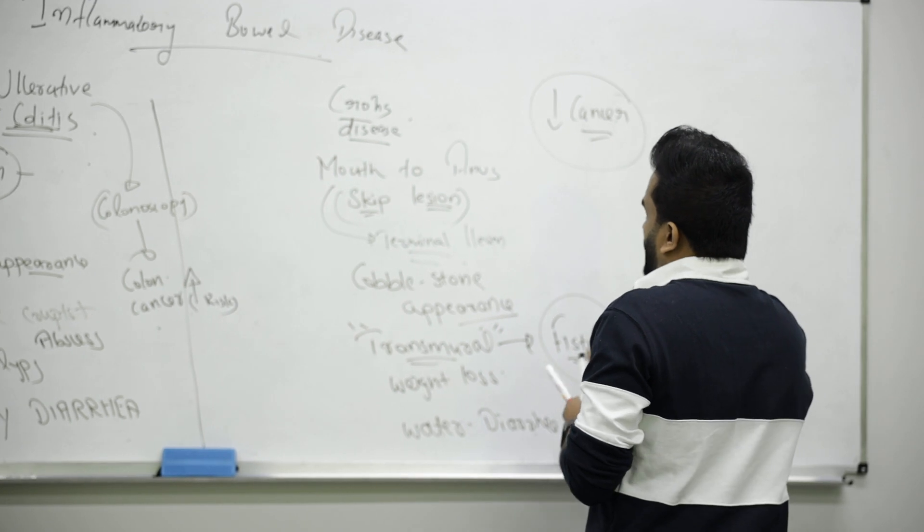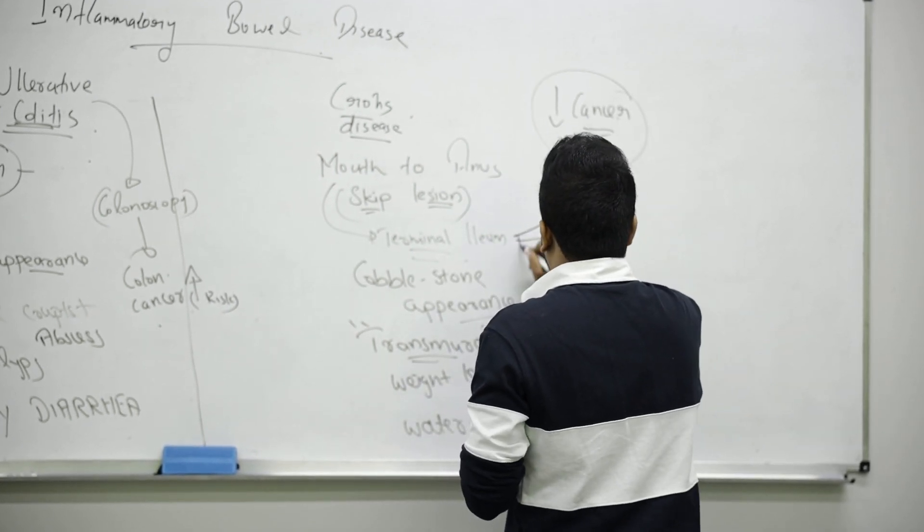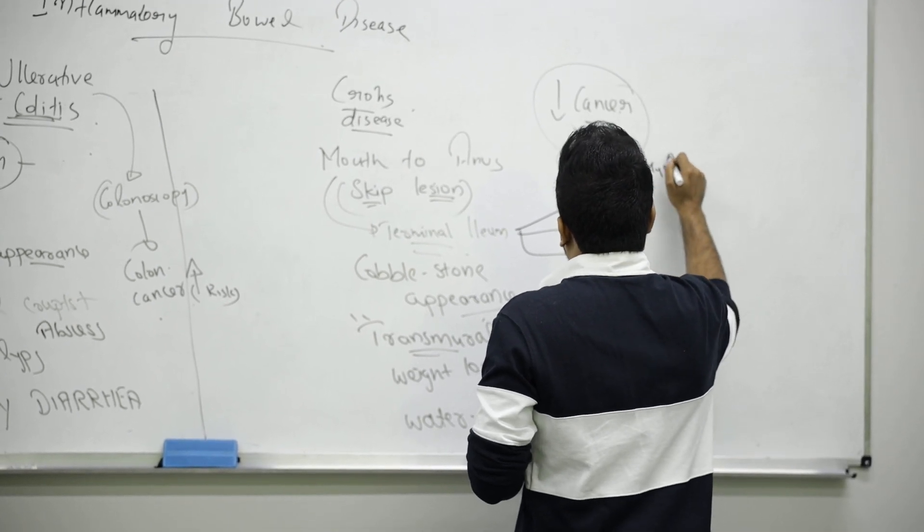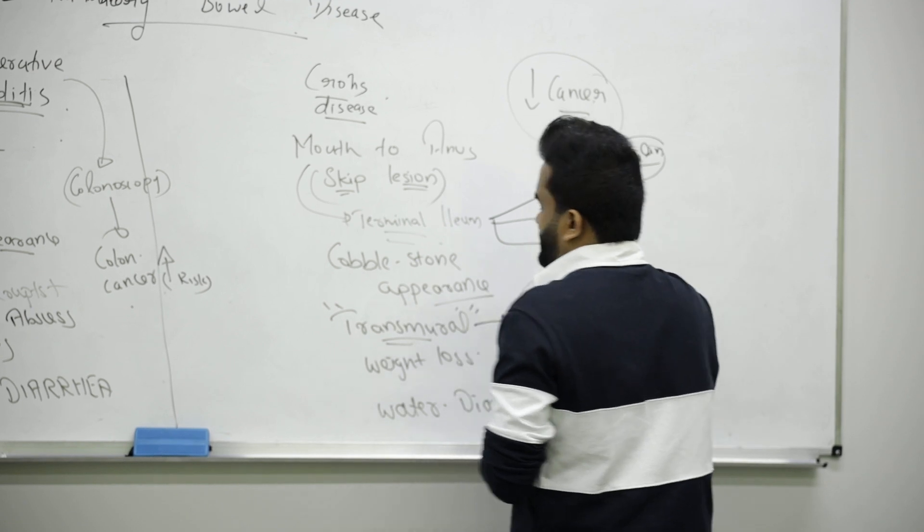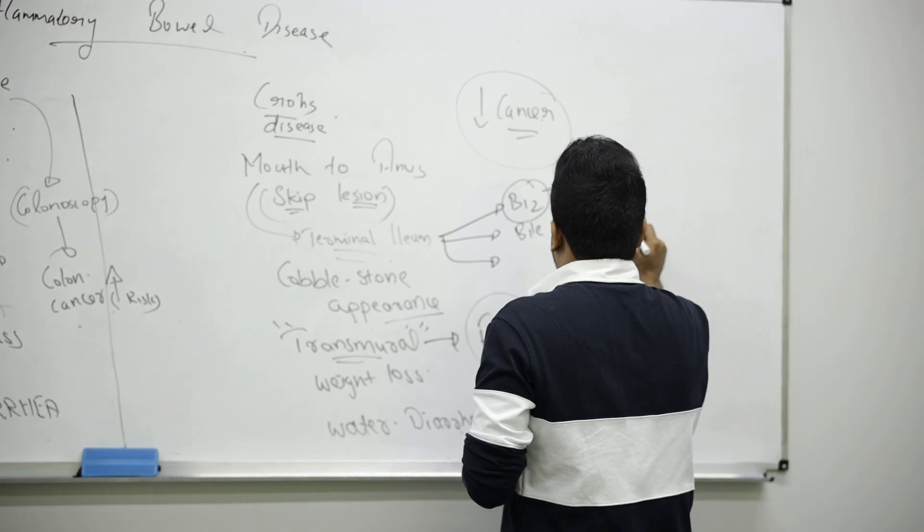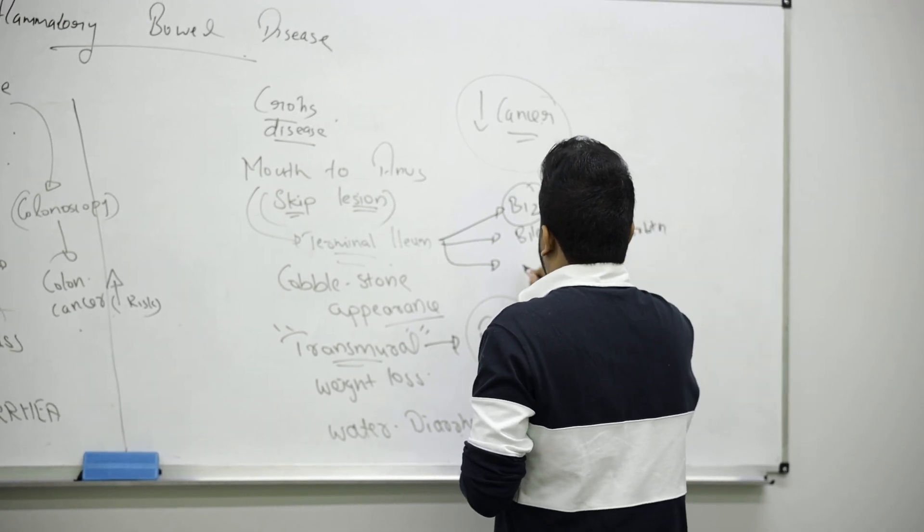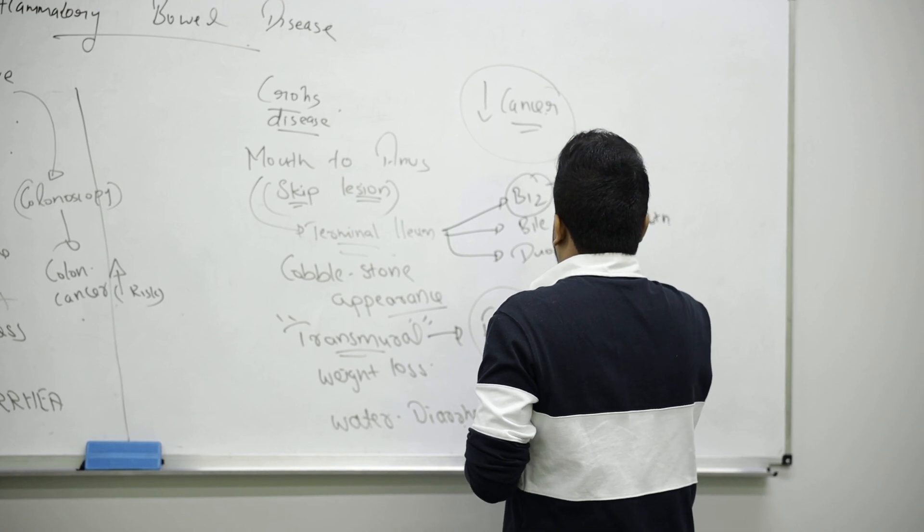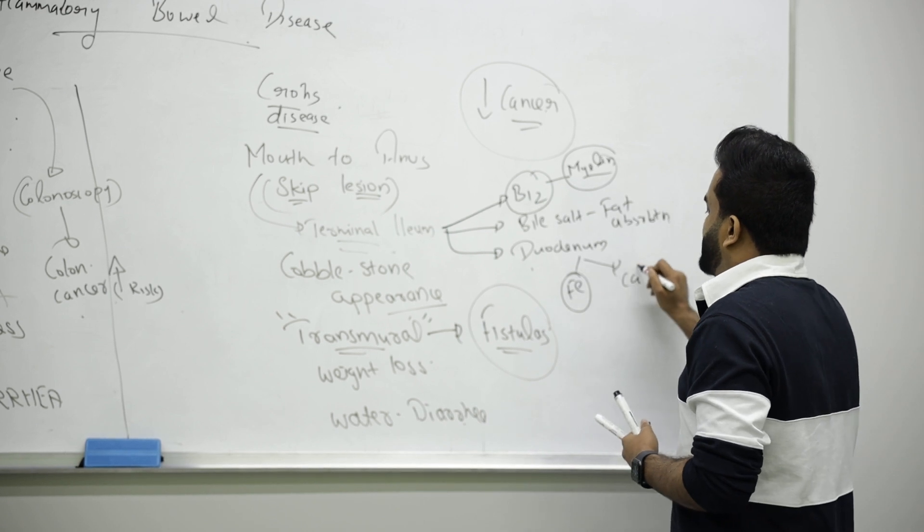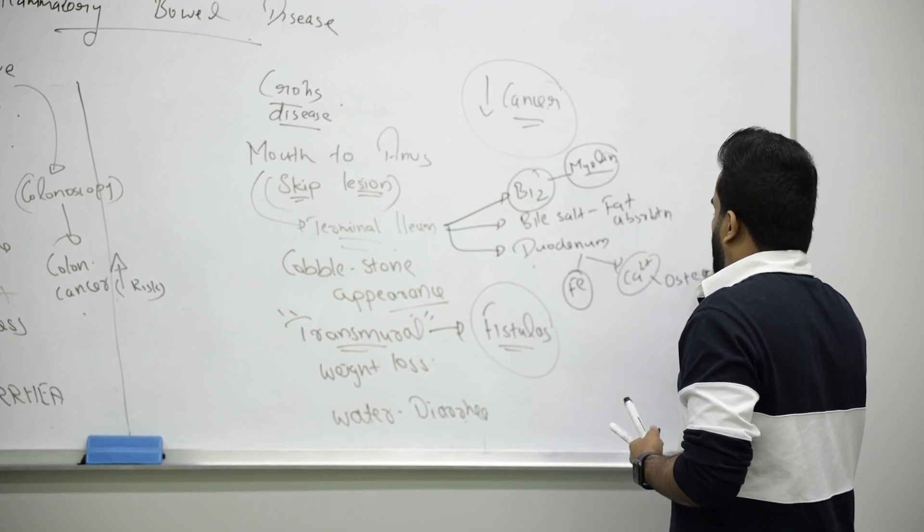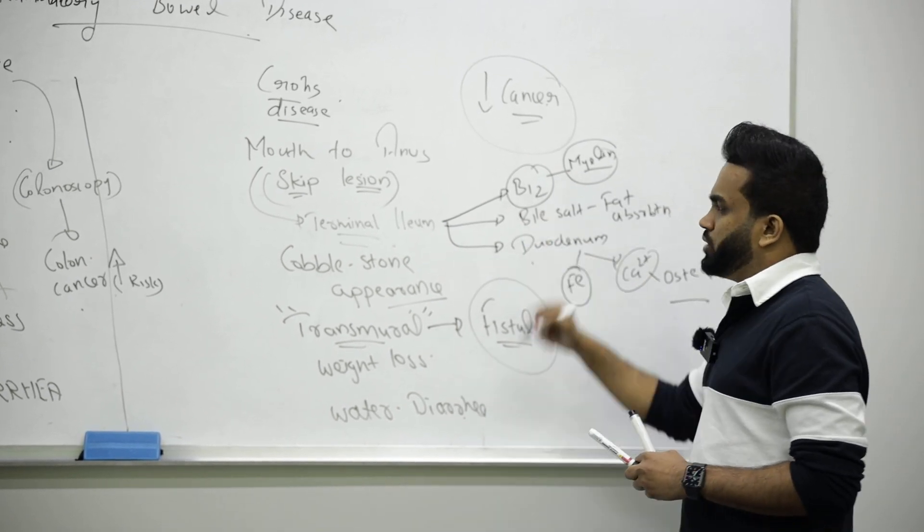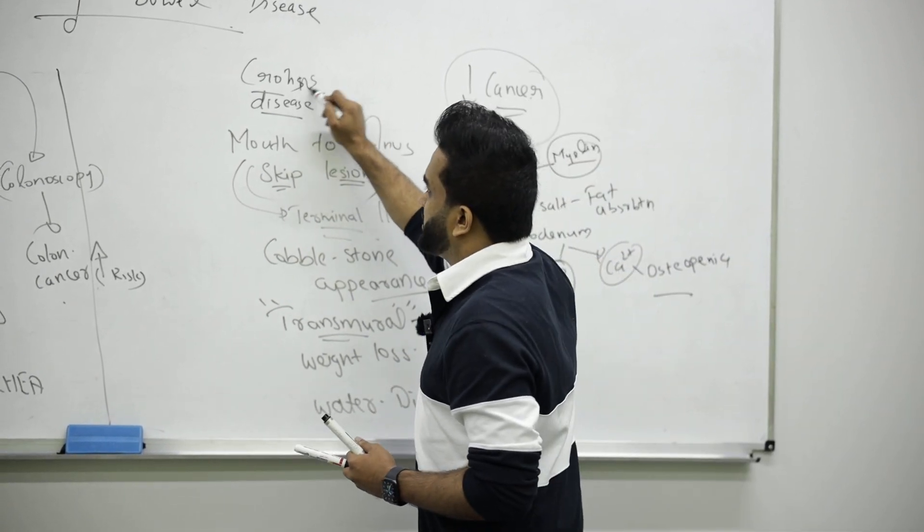In Crohn's disease, terminal ileum is mainly affected. So the problem is you will have problem with vitamin B12, so problems with myelin sheath or nervous system, spinal cord degeneration. Problems with bile salt, so problems with fat absorption. Suspect problems in the duodenum, so problems like iron deficiency anemia. Proximal duodenum problems with calcium, so patient can have osteopenia or osteoporosis. You can connect the problems - vitamin B12 problem comes with Crohn's disease, megaloblastic anemia or macrocytic anemia can be related.